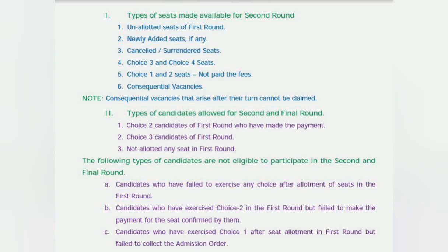Which seats are available for the second round? There are four to five types of seats. First is the unallotted seat from the first round — these will be very few, mostly in lower-ranked colleges, since all good college seats will already be allotted. Newly added seats will hardly be there, and even if present, they will mostly be in not-so-good colleges.